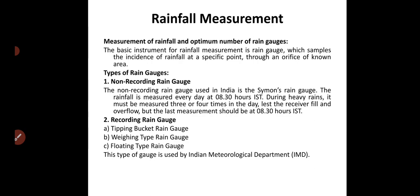Regarding measurement of rainfall and the optimum number of rain gauges: a rain gauge is an instrument used to measure rainfall. Types of rain gauges are non-recording rain gauge and recording rain gauge. Non-recording rain gauges are very simple and are used to collect only rain water. After a given period of 24 hours, water collected is measured by a measuring jar and a record is maintained to get monthly total and monthly average rainfall. This is a simple but not very accurate type of rain gauge.